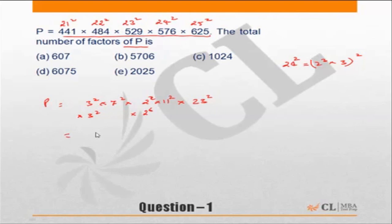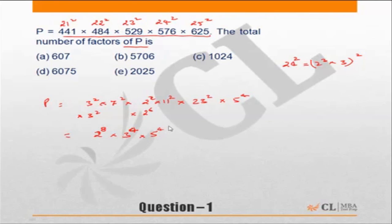P is nothing but 2 to the power 8, times 3 to the power 4. I missed out 25 squared — 25 squared is 5 to the power 4. Then we have 7 squared times 11 squared times 23 squared.